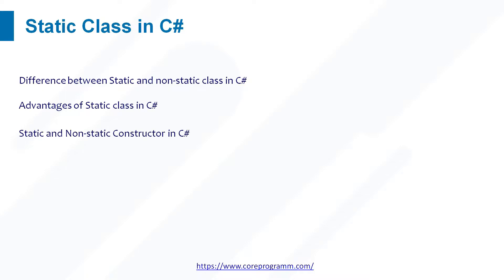Let's understand static and non-static constructors in C#. If you create a constructor explicitly with the static modifier, then we call it a static constructor; the rest are non-static constructors. The most important point to remember is that the static constructor is the first block of code which gets executed in a class. No matter how many objects you create, the static constructor is executed only once.